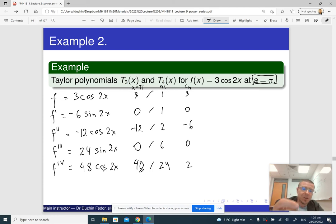Okay, so which is how we get T3 is 3 plus 0. I will just skip 0, so plus,